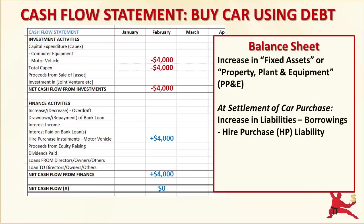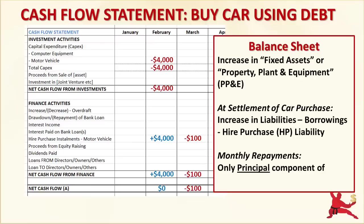Let's say you repay the hire purchase facility with monthly instalments of $100. These repayments will be a cash outflow of $100 under Finance Activities each month. Each instalment has two components: principal and interest. Only the part that represents the principal component goes towards reducing the hire purchase facility liability on your Balance Sheet.